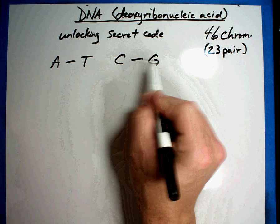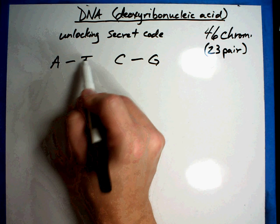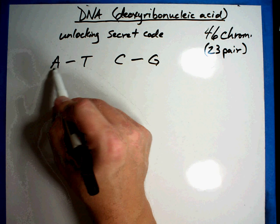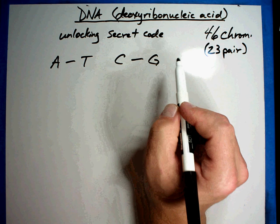Now the easy way to remember it is A and T both have straight lines, so they go together. Cs and Gs are curved letters, so they go together. So that's an easy way to remember it.